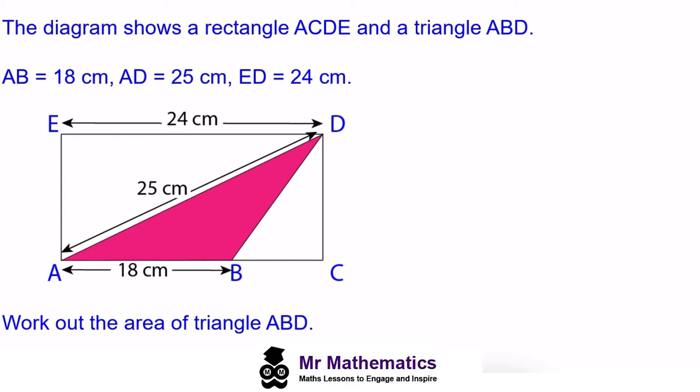In this question we've been asked to work out the area of the red triangle A to B to D. We know that the area of any triangle is one half of the base multiplied by the height, and we've been told that the base is 18 centimeters, which is this length here.